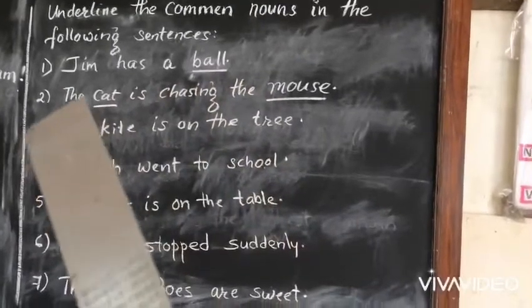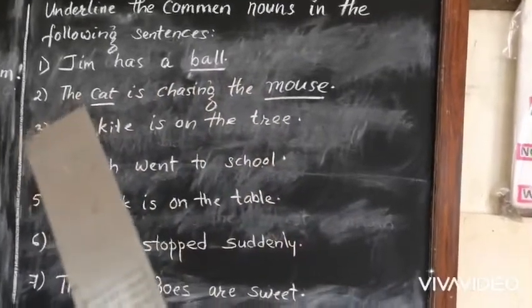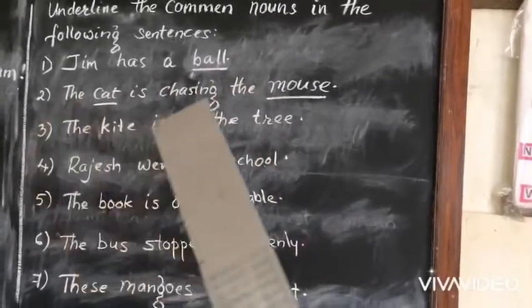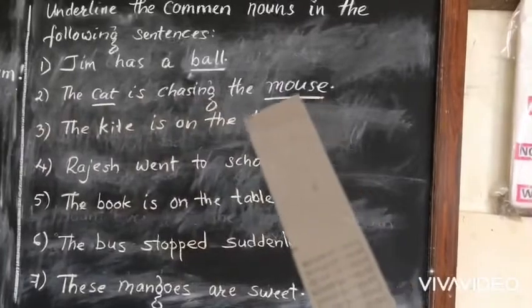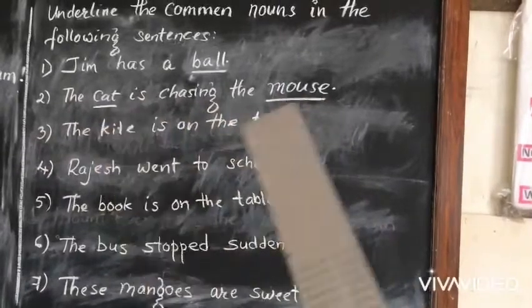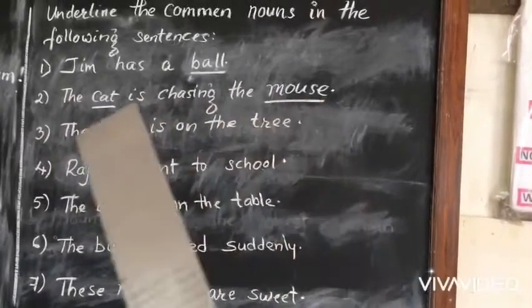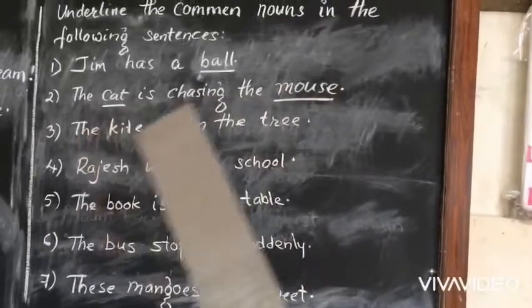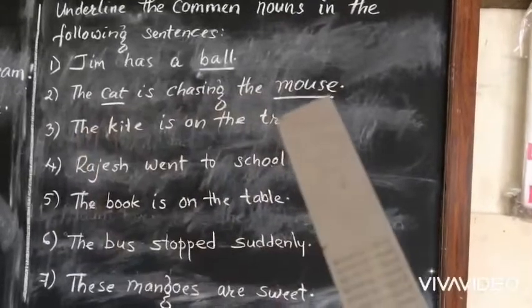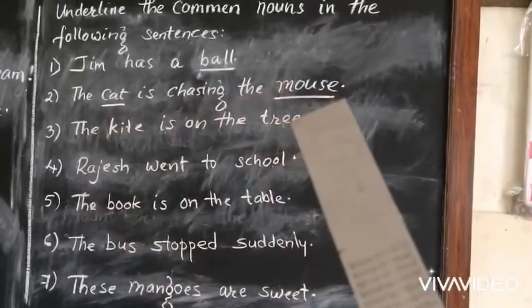The second one: the cat is chasing the mouse. In this sentence, there are two common nouns — cat and mouse.